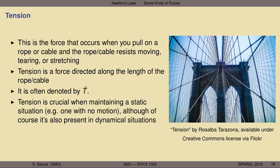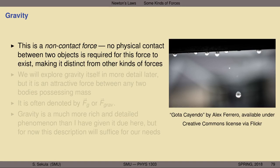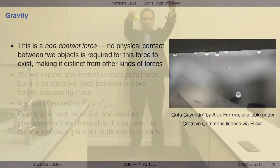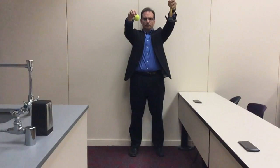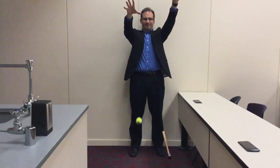Gravity is another extremely familiar force, but what sets it apart from friction or tension is that this is a non-contact force — absolutely no physical contact between two objects is required for this force to exist. You don't need air to be between the two objects; no material substance can lie between two objects and yet they can experience the force of gravity. This makes it extremely distinctive from other kinds of forces. Friction and tension are explicitly contact forces.